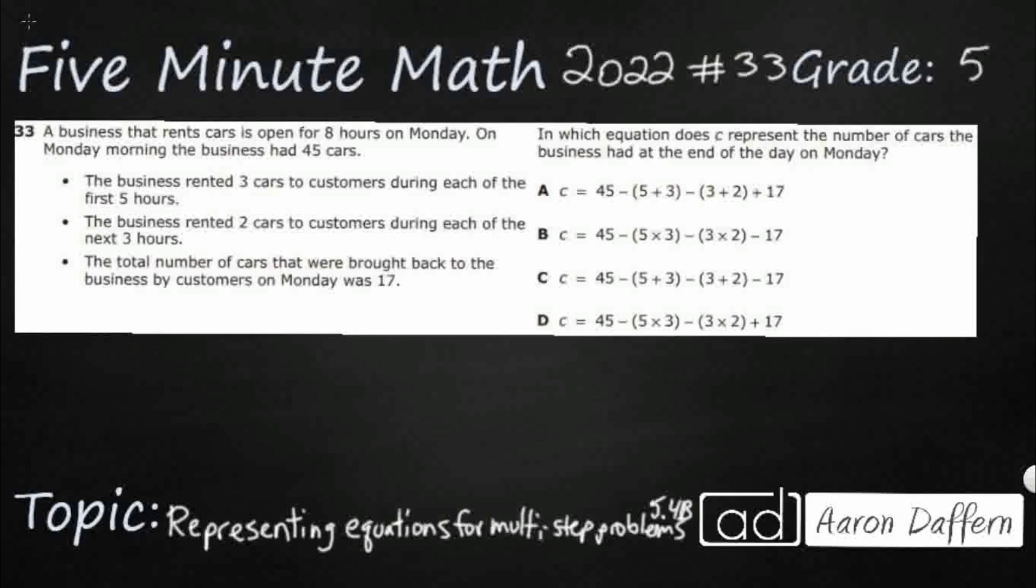So we have a business that rents cars, open for eight hours on Monday. On Monday morning, the business had 45 cars. The business rented three cars during each of the first five hours, two cars during each of the next three hours.